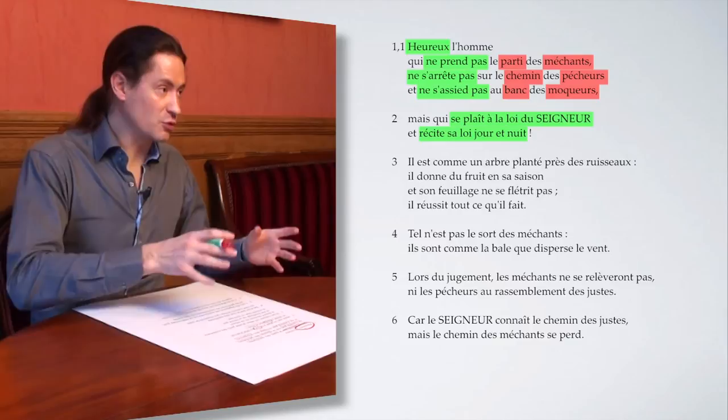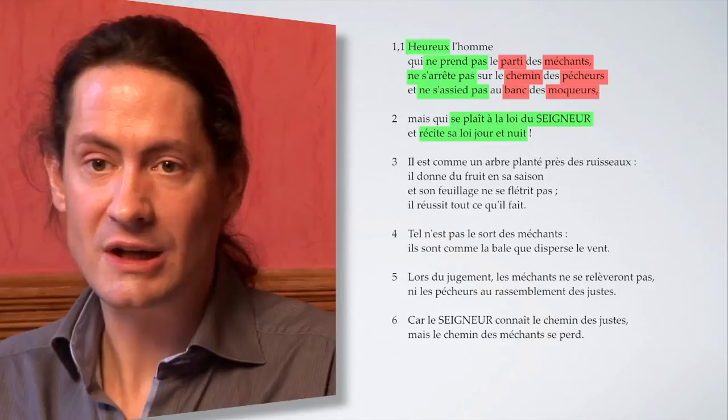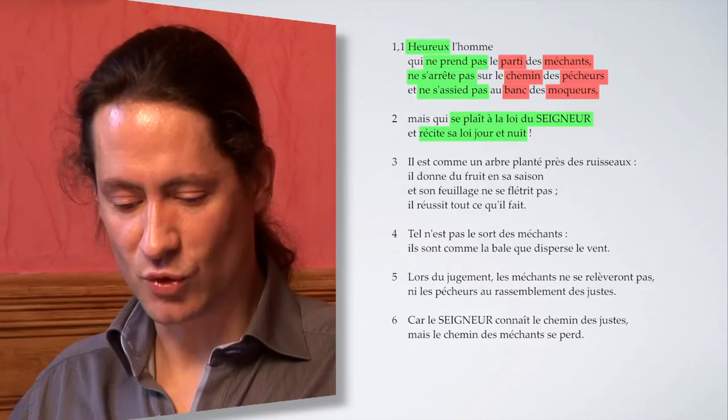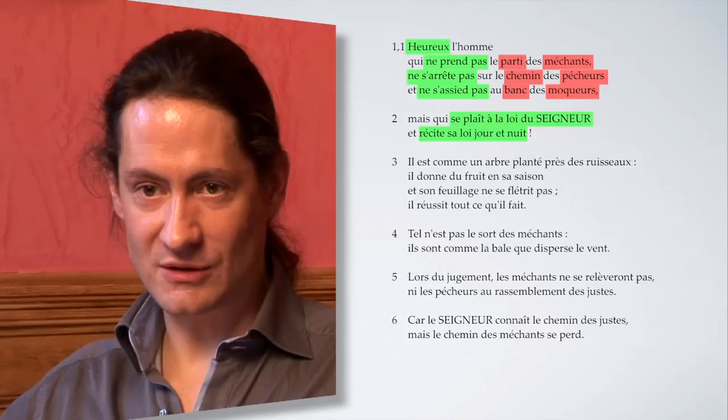Peut-être le psautier, habilement introduit ici. Peut-être aussi le Pentateuque, puisqu'on l'appelle ailleurs la Torah de Moïse. Et peut-être enfin l'ensemble des livres saints qui seront plus tard rassemblés et appelés Bible. Nous voyons donc ces deux éléments de la clé du bonheur : rejeter le mal d'une part, prendre plaisir à l'écoute de Dieu d'autre part.